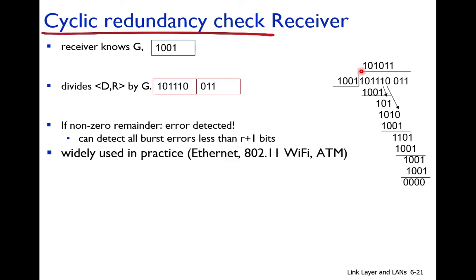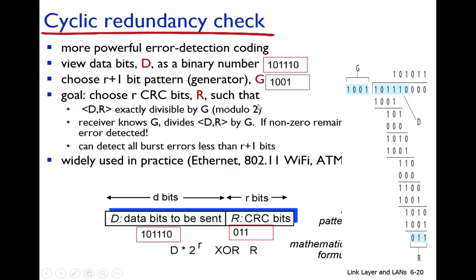CRC can detect all burst errors of length less than r+1. For example, if r is 3, CRC can detect up to 3 consecutive changed bits. It is computationally expensive due to the division involved, but it is widely used in Ethernet, Wi-Fi, and ATM because those link-layer protocols are implemented in hardware and can perform it quickly. UDP, TCP, and IP use the checksum method instead.